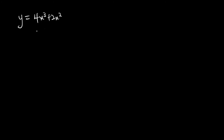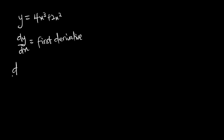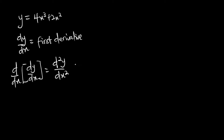Normally when we differentiate a function — let's say y is equal to 4x cubed plus 2x squared — if we differentiate this function we get dy/dx, which is what we call the first derivative. Now what happens if we differentiate the first derivative? When we differentiate the first derivative, we apply d/dx to dy/dx, and when we differentiate the first derivative we get the function we call d²y/dx².